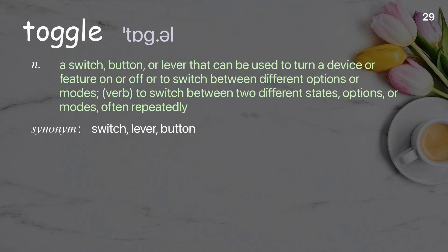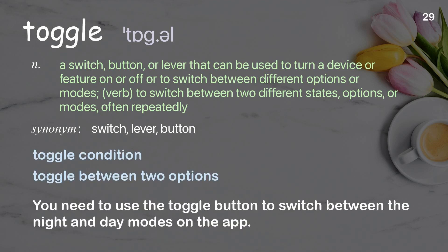Toggle: A switch, button, or lever that can be used to turn a device or feature on or off, or to switch between different options or modes. Verb: to switch between two different states, options, or modes, often repeatedly. Examples: Toggle condition. Toggle between two options. You need to use the toggle button to switch between the night and day modes on the app.